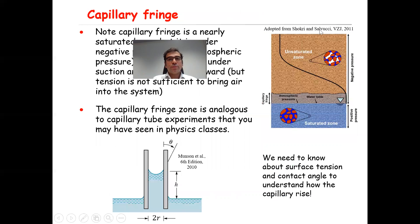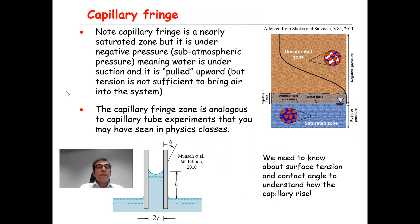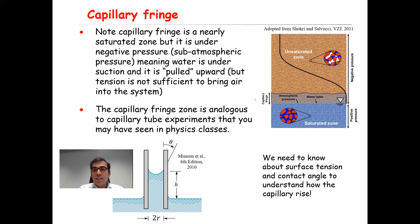So what is the capillary fringe? The capillary fringe is a nearly saturated zone, but it is under negative pressure — sub-atmospheric pressure. It is very important to remember that the pressure is negative throughout the capillary fringe zone. In other words, in that region the water is under suction — it is pulled upward — but the negative pressure is not sufficient to bring air into the system.